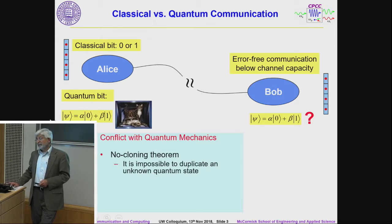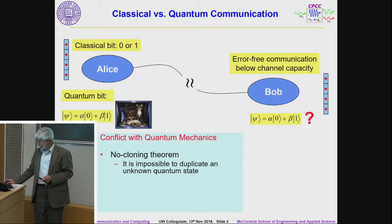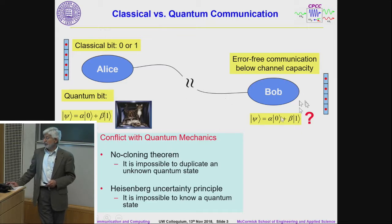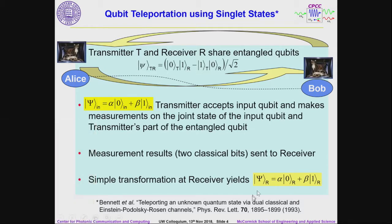It violates the no-cloning theorem in the sense that if there was a string of qubits here and then the same string of qubits there, you would have two copies. And if you try to measure and resend — like a fax machine or Star Trek transportation — that is also not quite possible because the Heisenberg uncertainty principle limits you from measuring a quantum state. So this seemed like an unsolvable problem.